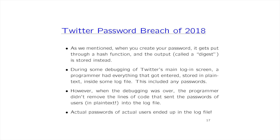There was the Twitter password breach of 2018. When you create your password, it goes through a hash function and the digest is stored. But somebody was debugging — there was an issue with the login screen. The debugger made a log file that kept everything going in and out of the login code, including the passwords in plain text — whatever the person wrote, right or wrong password, got stored along with usernames. When the debugging was over, the programmer didn't remove the lines of code that sent passwords in plain text to the log file, so actual passwords of actual users ended up there.